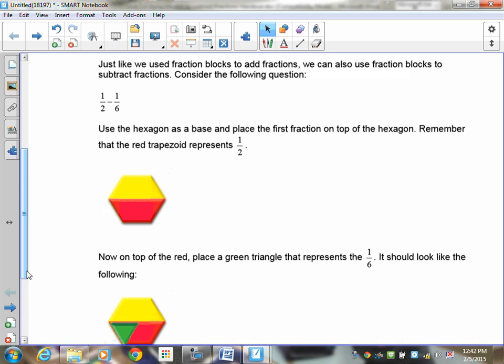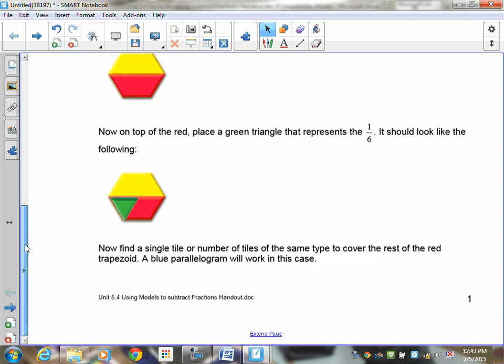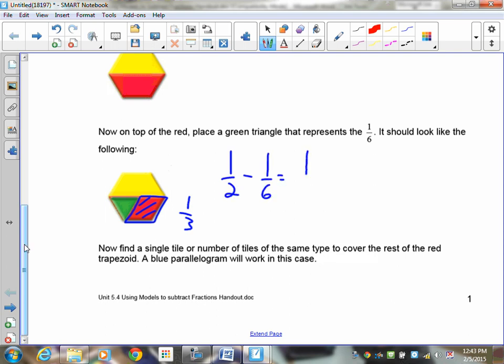Now I need to remove 1 sixth. So you would pull out 1 sixth which is your green triangle and you would place it on top of the red portion of the trapezoid. Now what is left showing is the answer, but you'll notice that it's red. So I need to find a shape that will cover that red color totally without going too far, without going over it or leaving anything showing. In this case, I'd be able to put a blue one over top of it and you'll see that a blue one covers right here and that is our 1 third fraction block and it covers it exactly. So we know that 1 half take away 1 sixth is equal to 1 third.